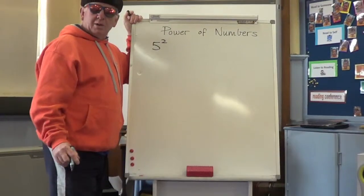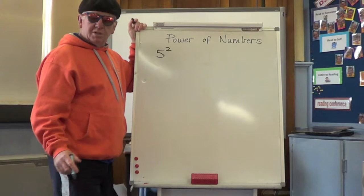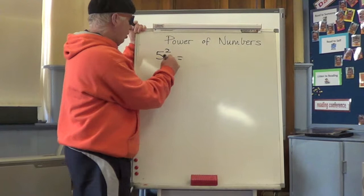Welcome back. We're doing power of numbers, otherwise known as exponential numbers. 5 squared, or 5 to the power of 2, means we multiply 5 by itself twice.